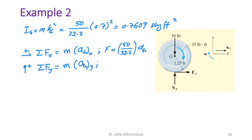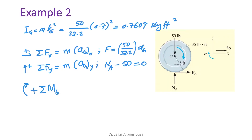This gives N_A − 50 = 0. This is equation two.